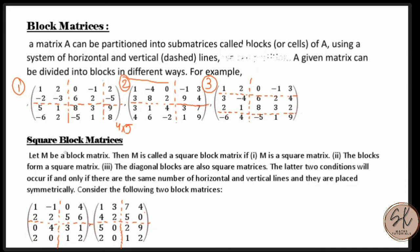Next, let us look at square block matrices. Let M be a block matrix. M is called a square block matrix if M is a square matrix, the blocks form a square matrix, and the diagonal blocks are also square matrices. These latter two conditions occur if and only if there are the same number of horizontal and vertical lines, placed symmetrically.